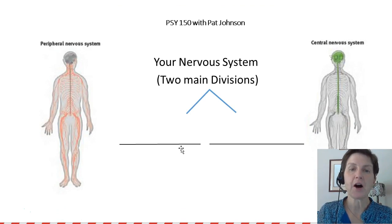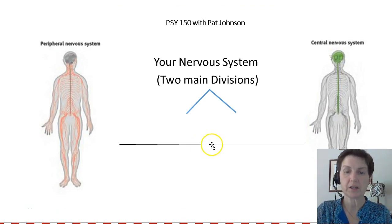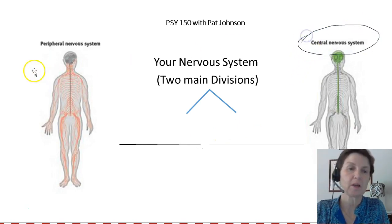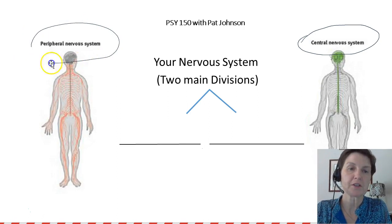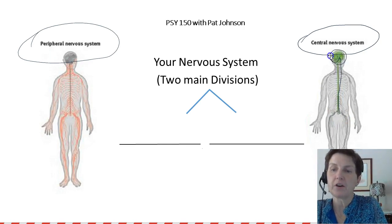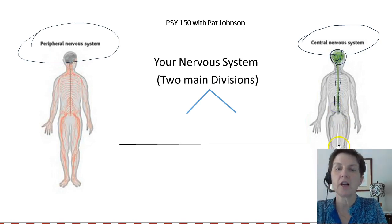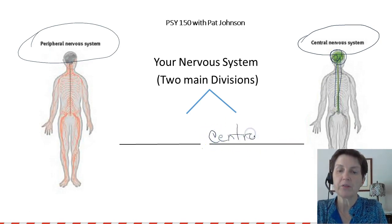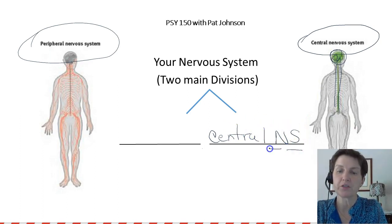So let's start at the top. Your nervous system has two main divisions. It has a central nervous system. The central nervous system is aptly named — it goes down the center of the body, almost like a lollipop. We could abbreviate that CNS, or central nervous system.